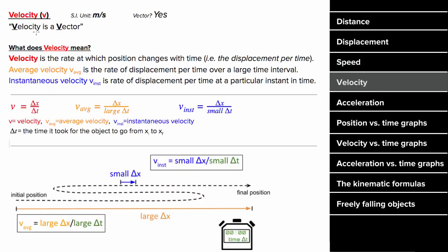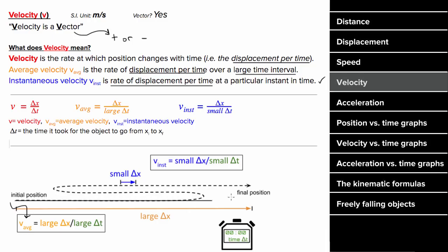What does velocity mean? Velocity is another way to determine how fast something's moving, but this one's a vector, which means velocity can be positive or negative. Velocity is defined to be the displacement per time. You could define the average velocity as the displacement per time over a large time interval, or the instantaneous velocity as the rate of displacement per time at a particular moment in time. If an object took a long winding path and you wanted the average velocity for the entire trip, you would take the displacement for the entire trip and divide by the time it took for that displacement.